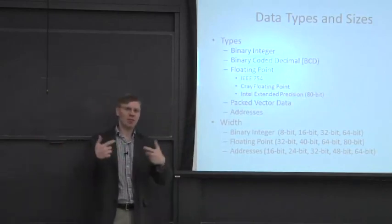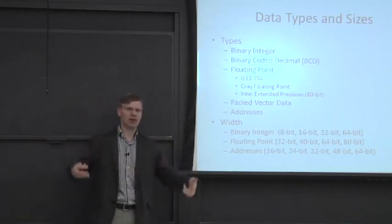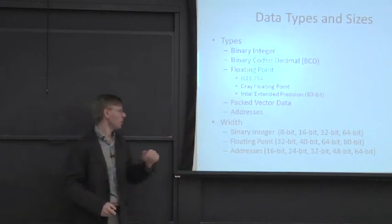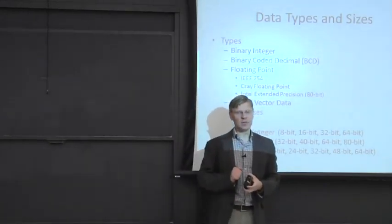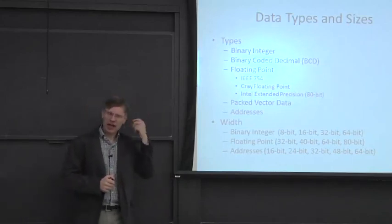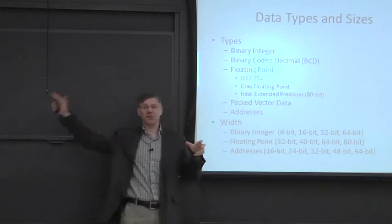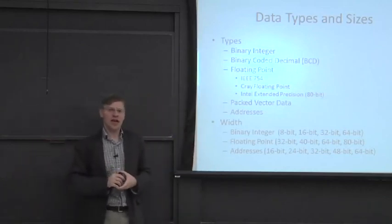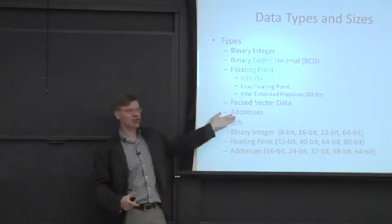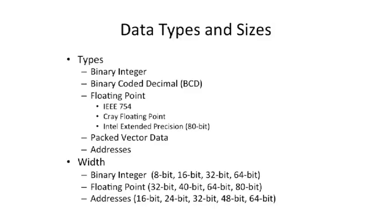You can have packed vector data, like MMX data, where you pack data together and operate on it all at the same time — you bring data into a packed data type and then operate on that whole type, which has different values in it. Some architectures even have a special data type called addresses, which is different from a binary integer. Older computers had address registers separate from data registers, providing type information — if you loaded something into an address register, the architecture knew it was an address. And that's separate from the width: machines have been built with 8, 16, 32, or 64 bits as the default word size.